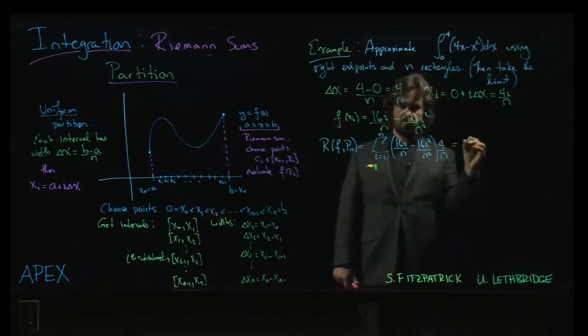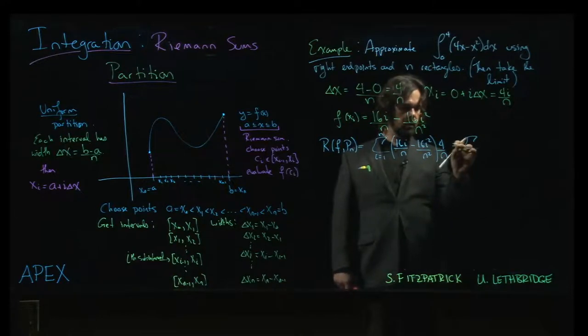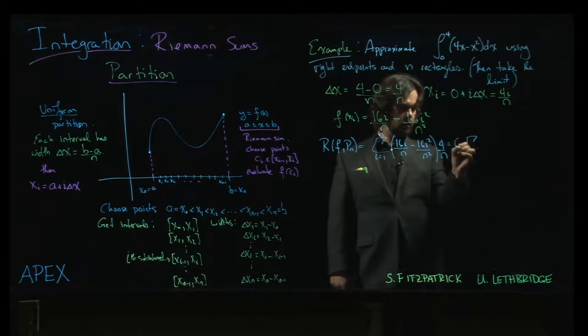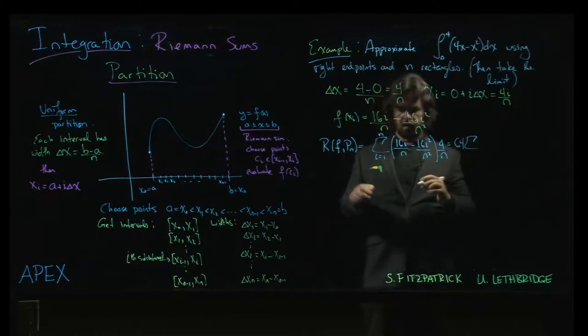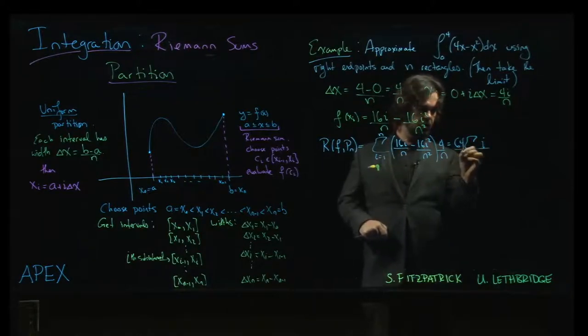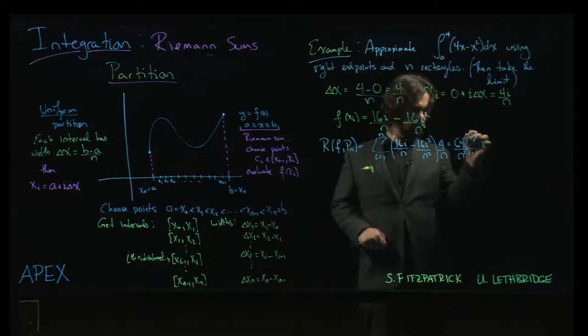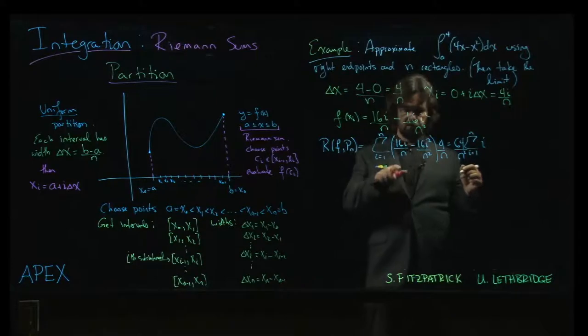So I'm going to rearrange this using properties of summation. Multiply the 4 over n, so 4 times 16, 64. Put one there, and I'm going to have i over n times n. So I have i, actually you can put the n squared out front, can't we? Because the sum doesn't actually care about the n, it's a common multiple.